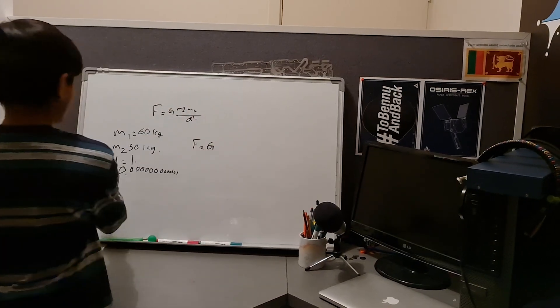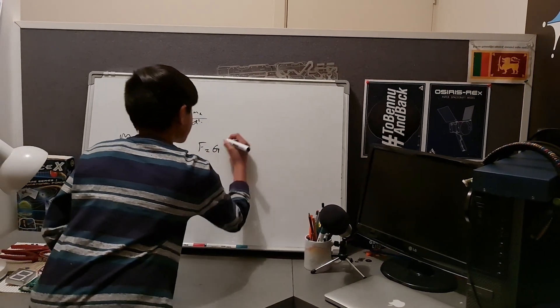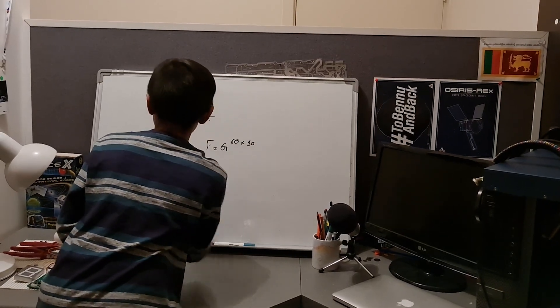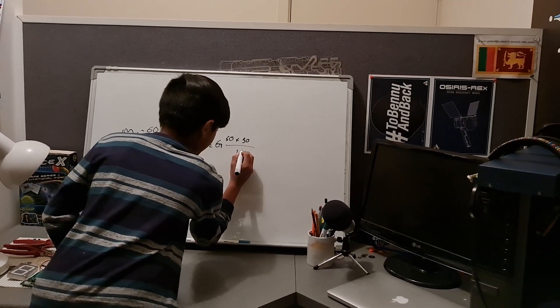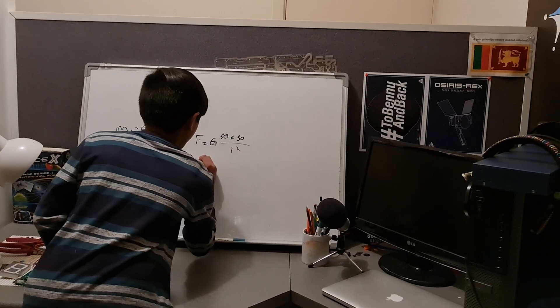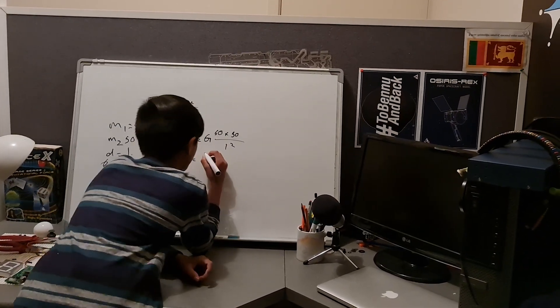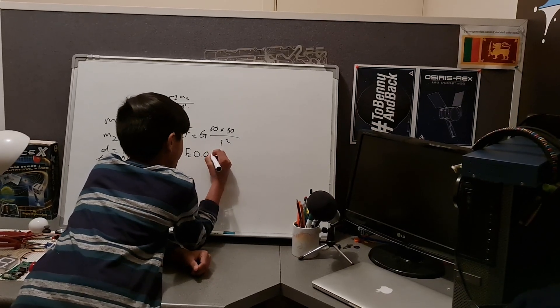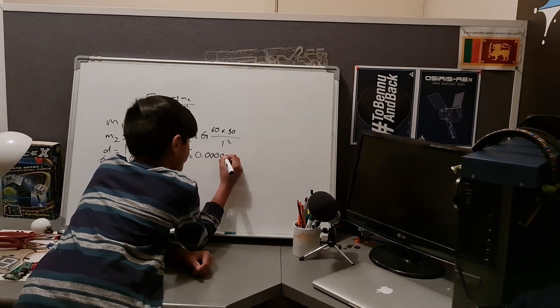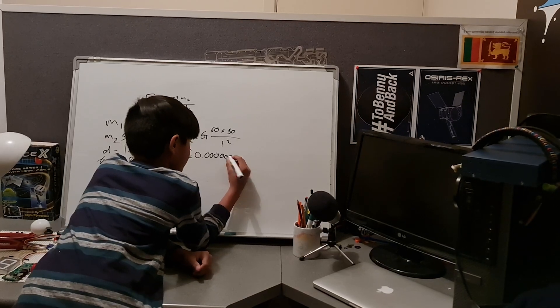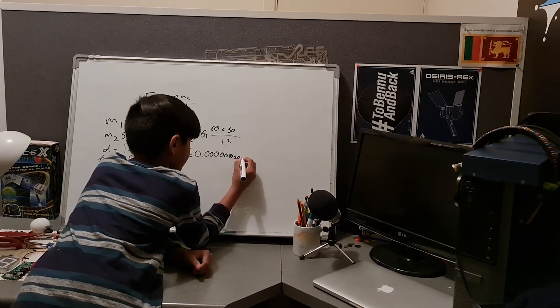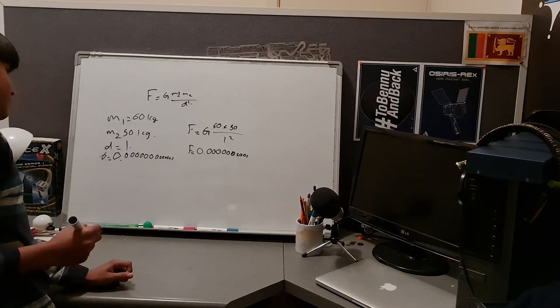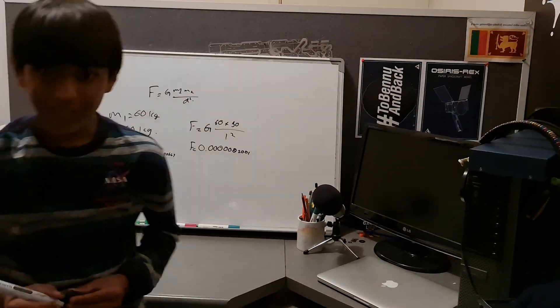So we have G, so we multiply G by 60 times 50 divided by 1 squared. And if you work this out, in newtons, your force of gravitational attraction would be 0.0000002001 newtons.